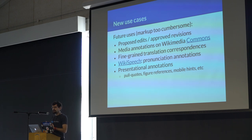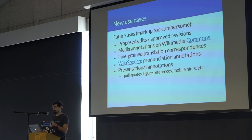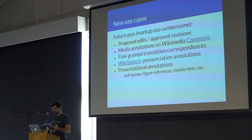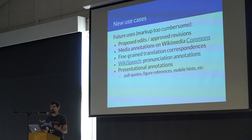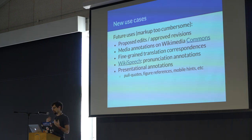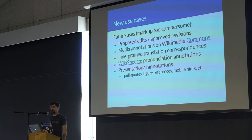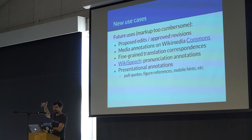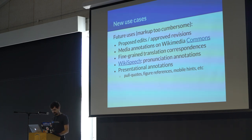We have a project called Wikispeech which makes our articles accessible to visually impaired people. We'd like to annotate words which require specific pronunciation hints. We'd also like to incorporate more presentational annotations as our content is used in more different formats — for example, pull quotes or fancy figure references. For mobile, there's a lead image displayed at the top of the page, and we'd like to use annotation to mark which image in an article is the lead image, whether it should be displayed full width, whether it's portrait or landscape, and all sorts of different tweaks.